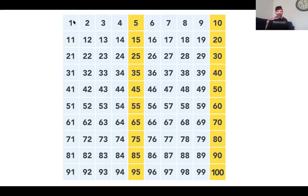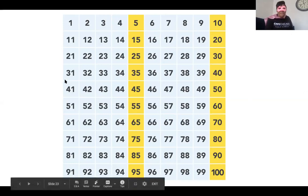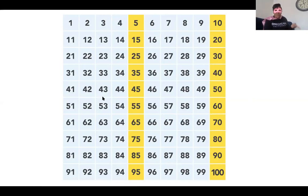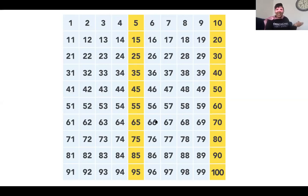And now, Kipsters, I know that good counters can start counting from any number by ones. So we're gonna start counting from the number 52 by ones. Get ready: 52, 53, 54, 55, 56, 57, 58, 59, 60, 61, 62, 63, 64, 65, 66, 67, 68, 69, 70. Whew, that was a lot of counting, Kipsters!